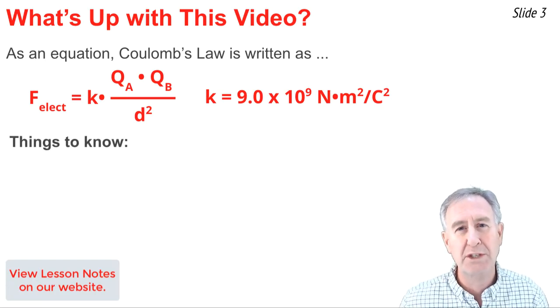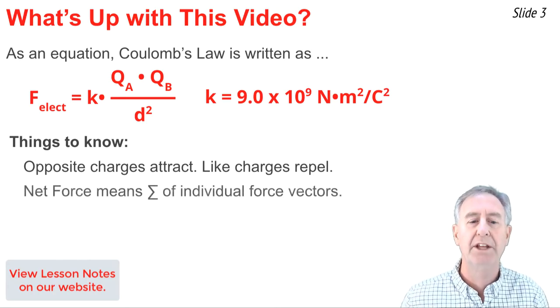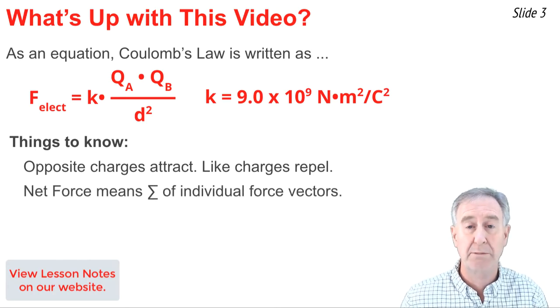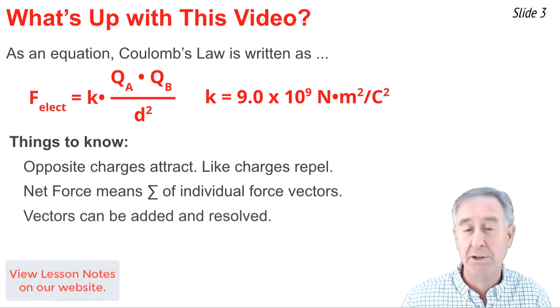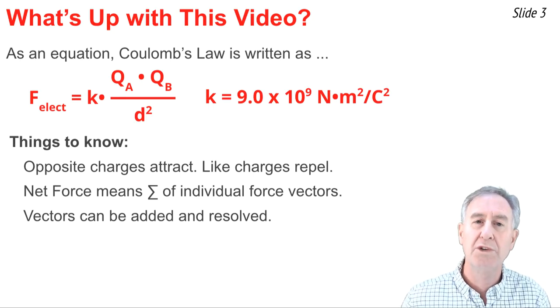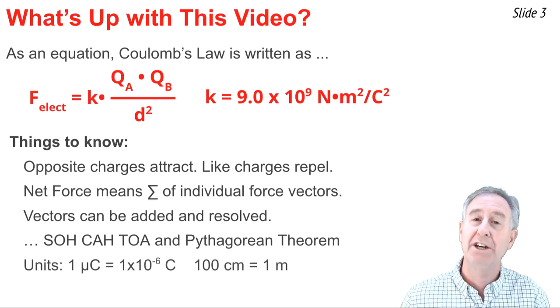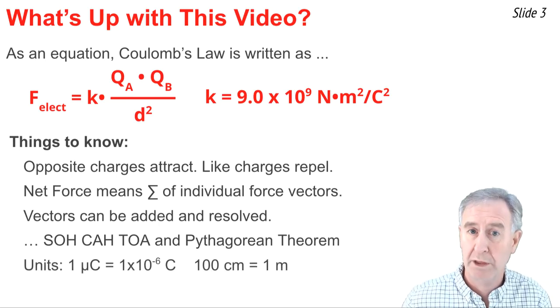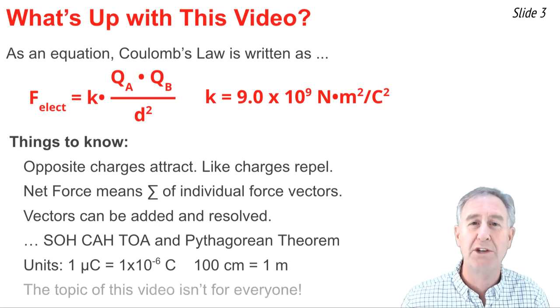Here's some things you need to know to be successful in this video. First of all, opposites attract and likes repel. You need to understand that a net force is simply found by summing the individual force vectors on an object. You need to understand that vectors, like a force vector, can be added and they can be resolved and typically we'll use things like SOHCAHTOA and the Pythagorean theorem to do so. You need to understand some things about units, like what the microcoulomb or the centimeter is and how to convert to more standard units used in the equation.